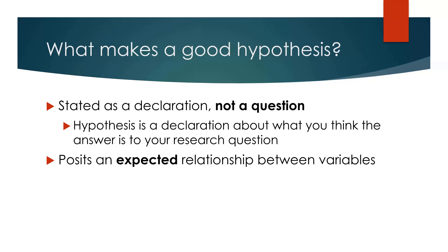The second quality is that the hypothesis posits an expected relationship or connection between your variables. I've got a variable of math IQ and a variable of English IQ. The hypothesis has to say something about what the connection between them is — are they different, are they the same? If the question asks 'is there a difference between math and English major average IQ?', the hypothesis has to reflect that connection and say something about whether they are different or not. So it has to have that second quality.